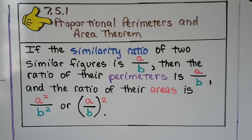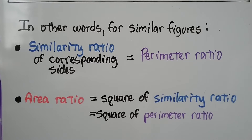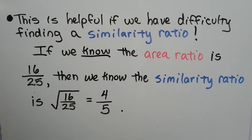For your notes, Theorem 7.5.1 — the Proportional Perimeters and Area Theorem — states: if the similarity ratio of two similar figures is a over b, then the ratio of their perimeters is also a over b, and the ratio of their areas is a squared over b squared, also written as (a over b) squared. So the similarity ratio of corresponding sides equals the perimeter ratio, and the area ratio equals the square of the similarity ratio. This is helpful when finding the similarity ratio: if the area ratio is 16/25, then the similarity ratio is the square root of 16/25, which is 4/5.